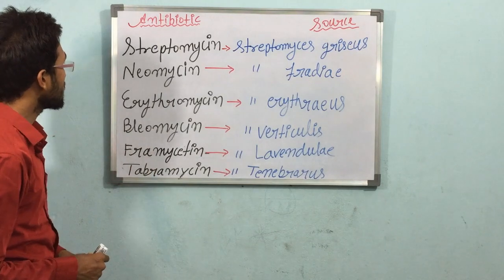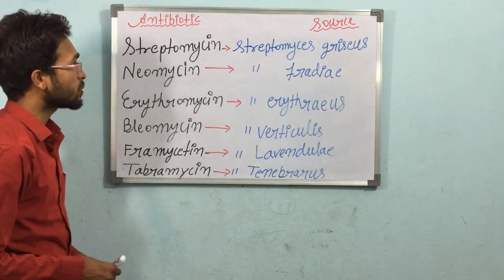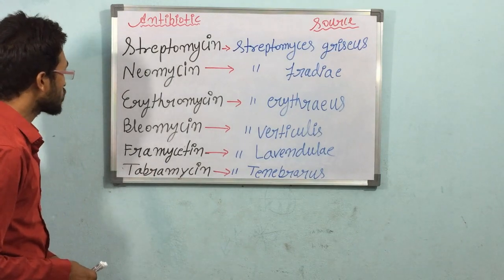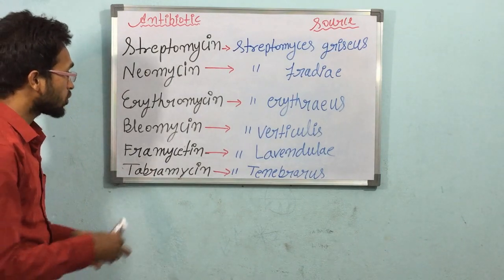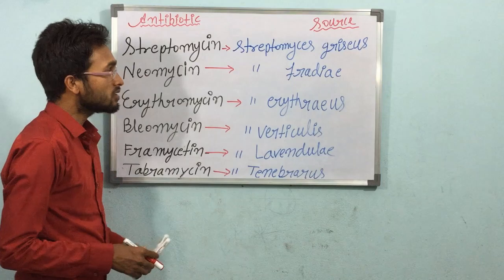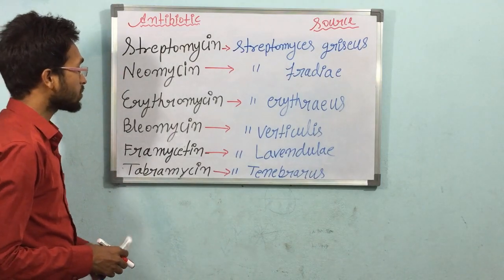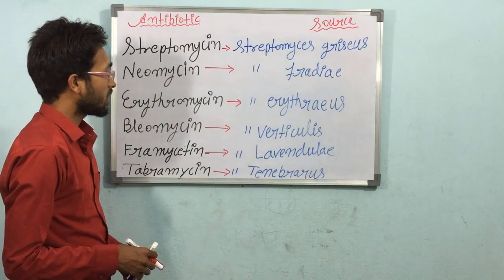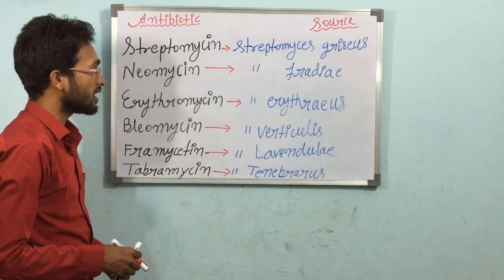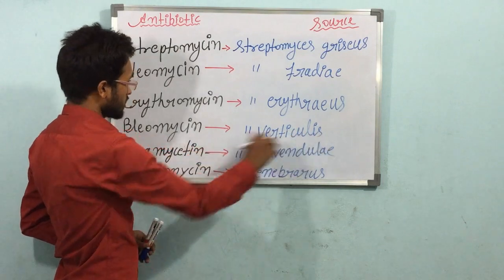And then next, Neomycin — for Neomycin the source is Streptomyces fradiae. And then Erythromycin — for Erythromycin the source is Streptomyces erythreus. And then Bleomycin — for Bleomycin the microorganism is Streptomyces verticillus.